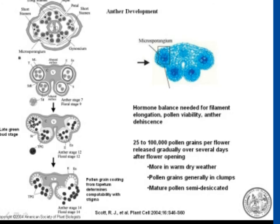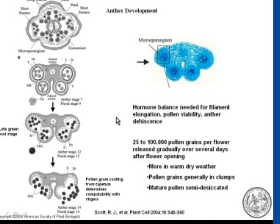It's also interesting that that layer — the tapetum — that puts on all that coating is actually the layer that the male sterility system in hybrid varieties has been targeted, and that's how it achieves its male sterility. Once that coating has happened and the pollen has matured, the anthers will first open their lobes and release their pollen. This is all a very orchestrated process with the right hormones needed in balance for the filaments to elongate and everything.